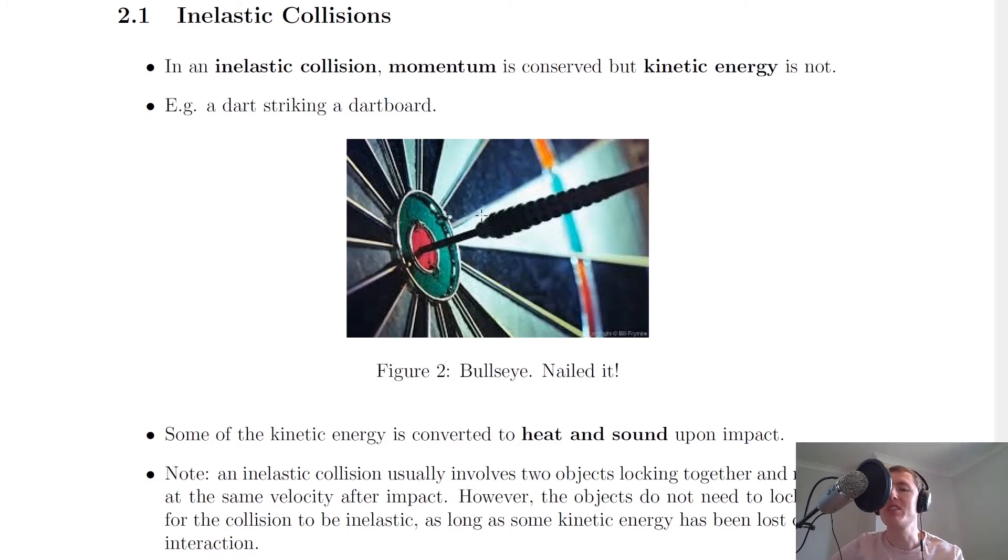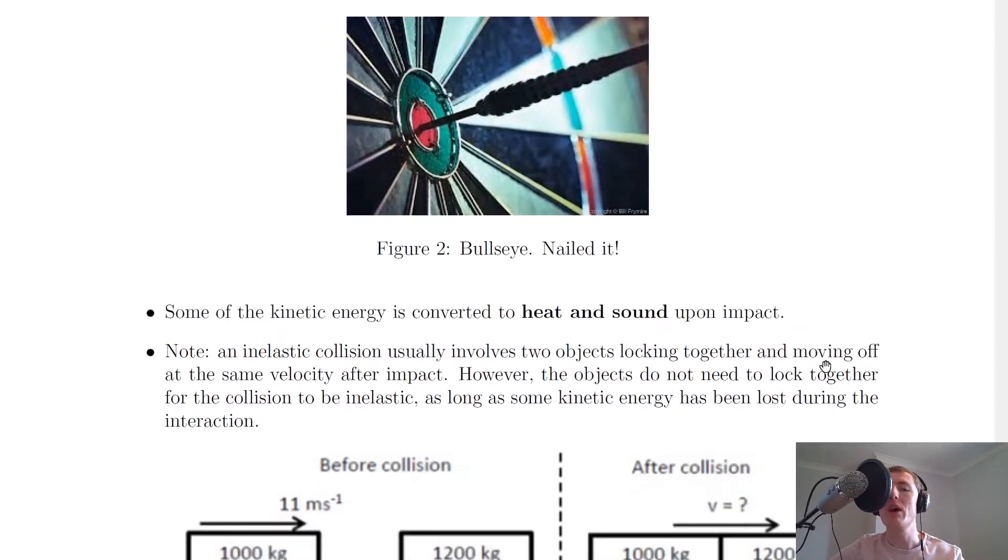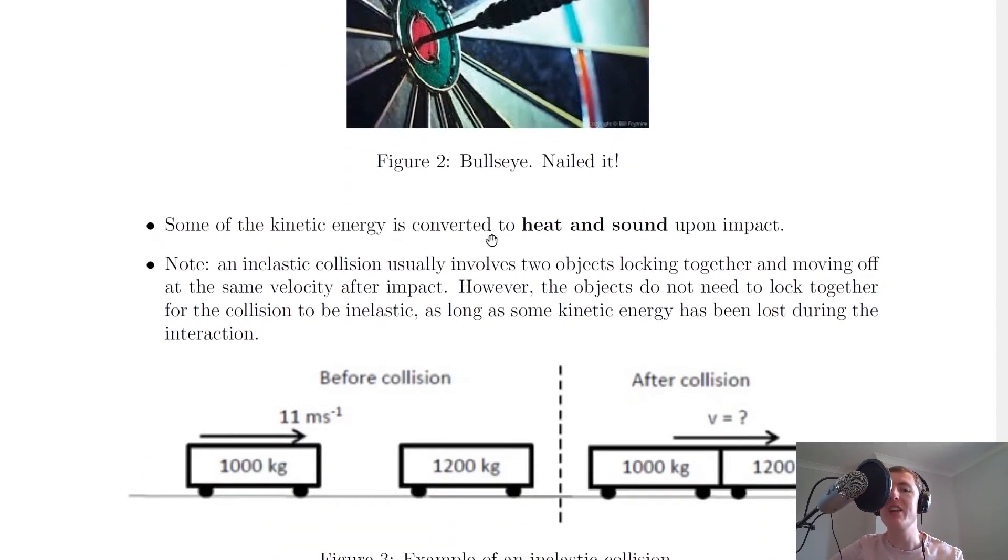But if the dartboard was instead hanging from the ceiling, then we might expect it to swing back and forth a bit because of the kinetic energy that has been transferred from the dart. But where is some of that kinetic energy going? Well, some of the kinetic energy is converted to heat and sound upon impact.